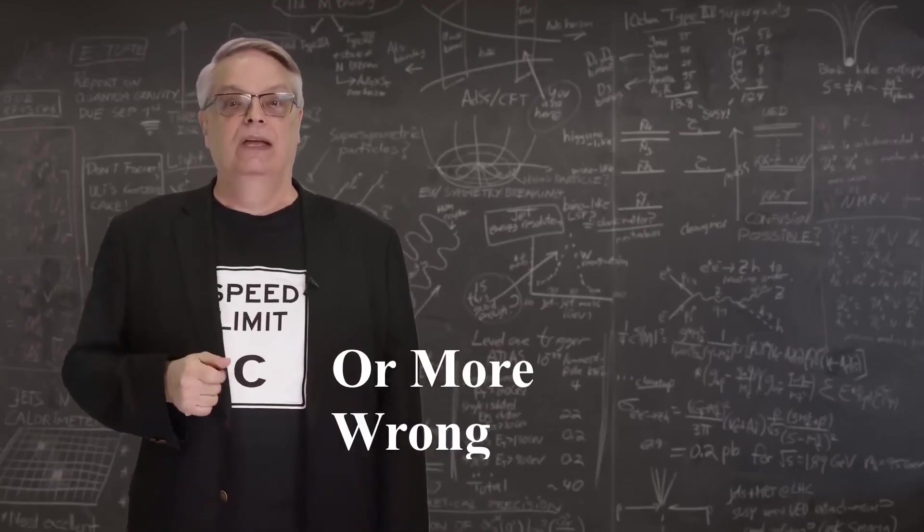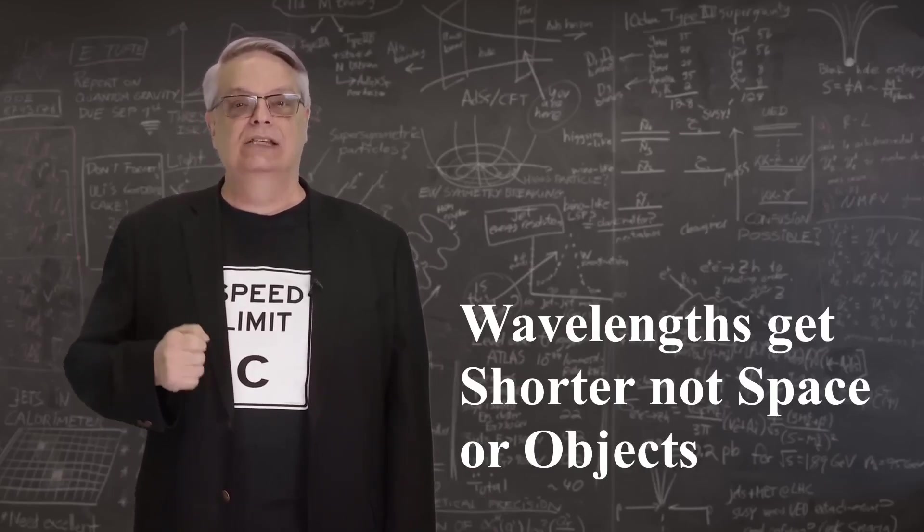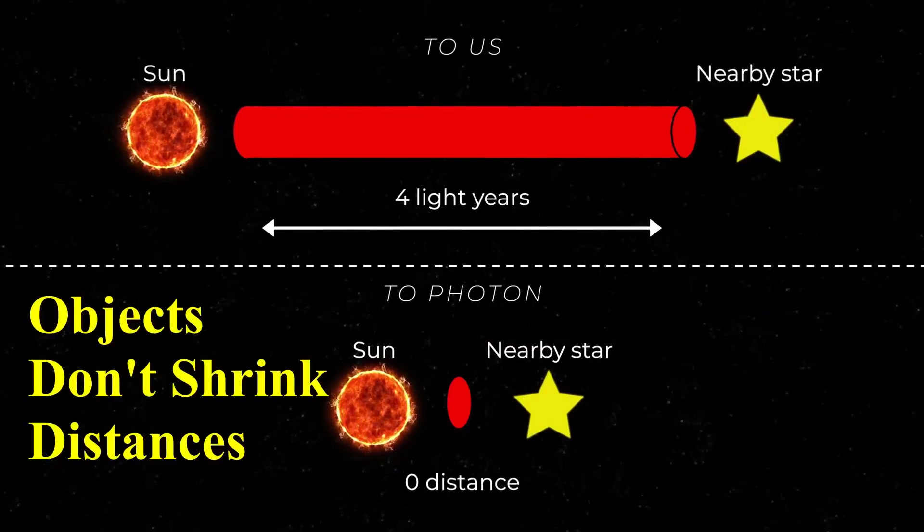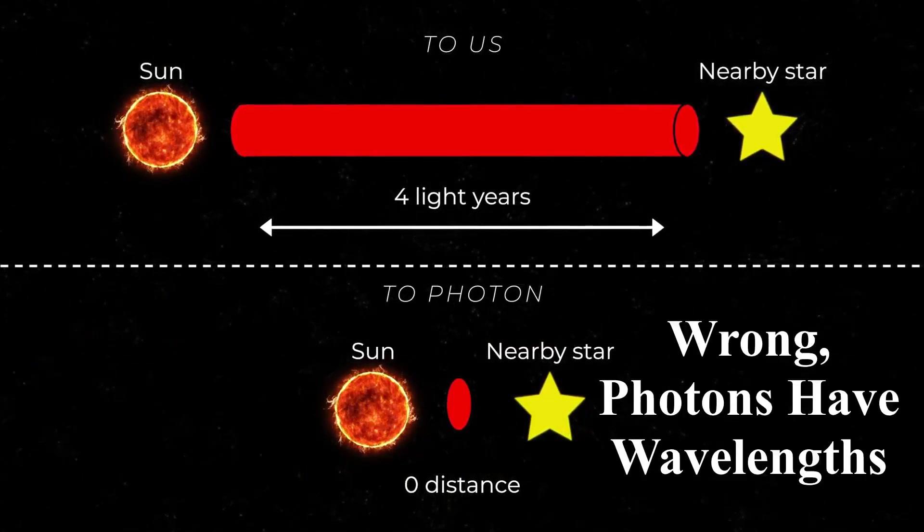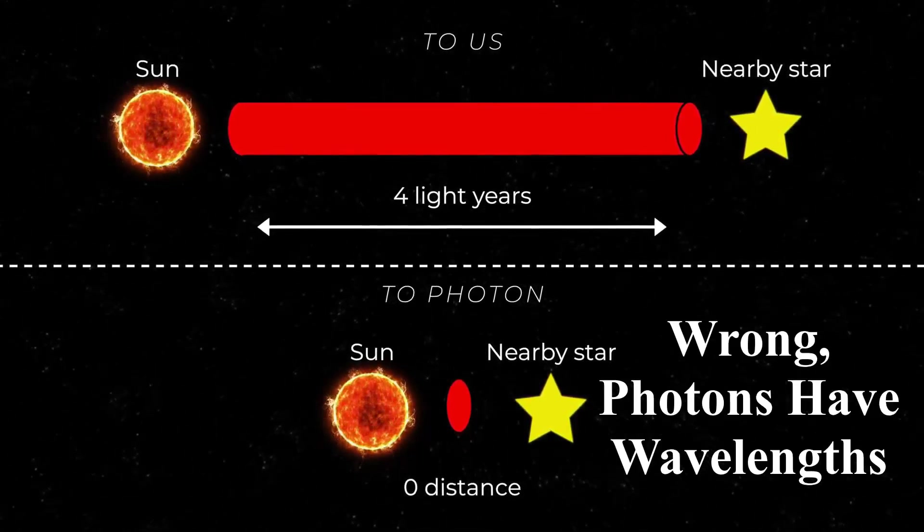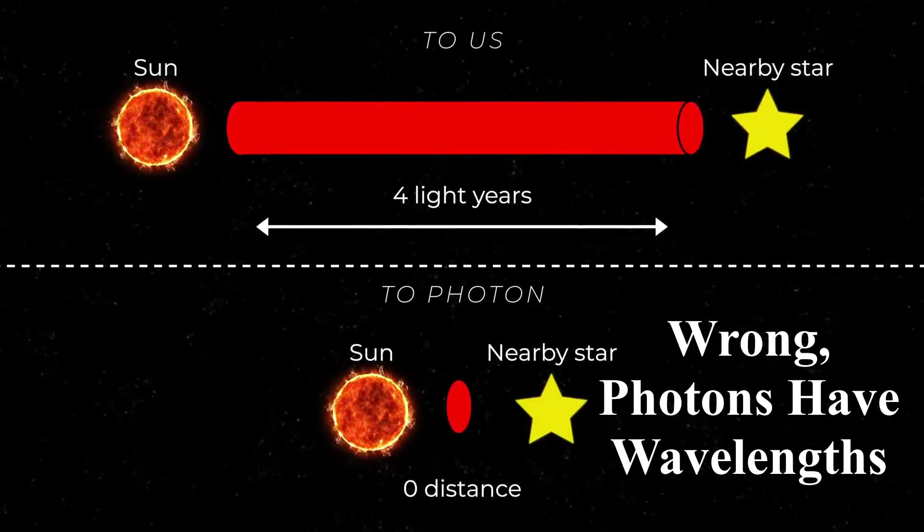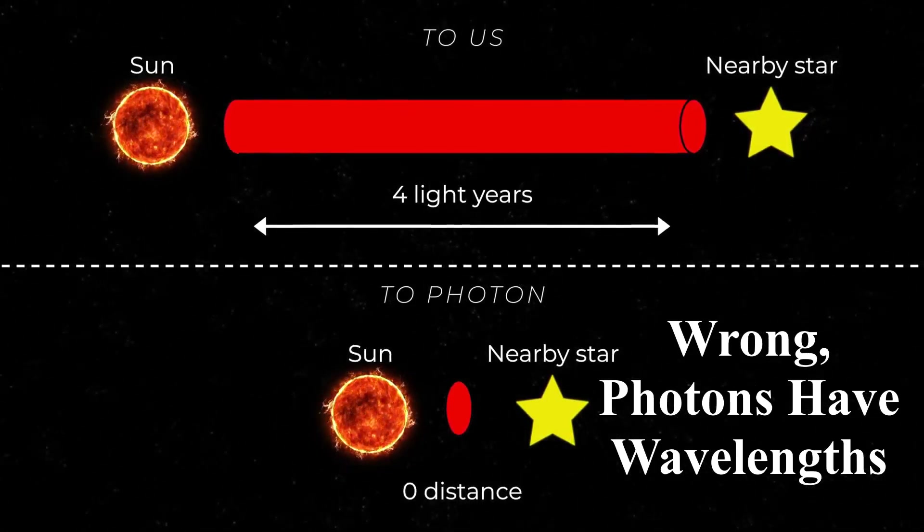And it gets weirder. Not only does relativity predict that times will shrink, but it also predicts distances will too. A fast-moving object will shrink distances in the direction of motion, although not side to side. If we made a cylinder that stretched from here to the next star, we'd see it as four light-years long, while the photon would see it as a circle with no thickness.